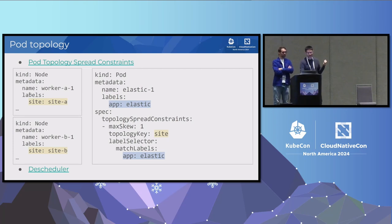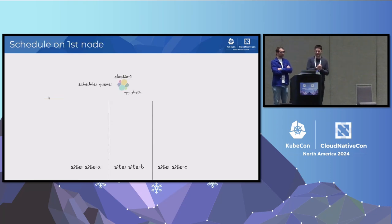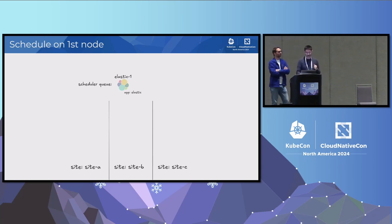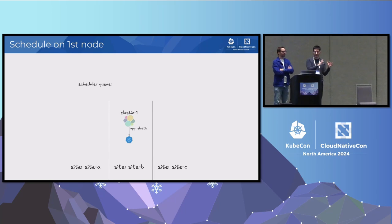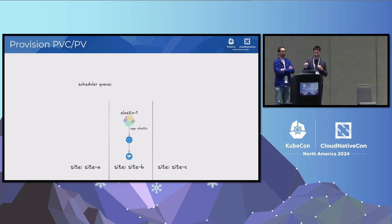This field in a pod tells the scheduler to keep a balance of pods with the 'elastic' label among topology domains. A topology domain is a label on a node. I have a cluster stretching over three sites with no Elastic running. The scheduler gets the first Elastic pod and picks a node randomly — for example, in site B. Dynamic provisioning usually happens after scheduling, so the CSI driver provisions the volume in that site, which is very convenient.